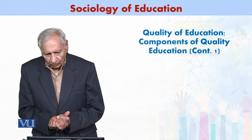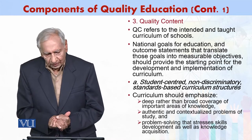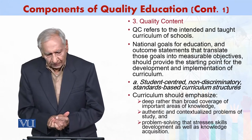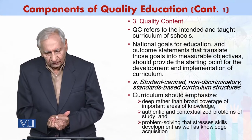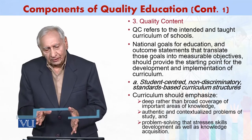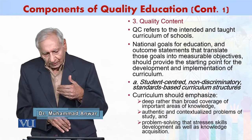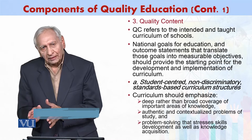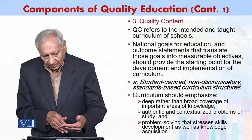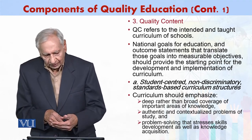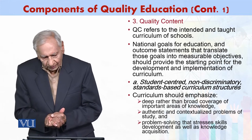Continuing with the components of quality education, we see that the third component listed over there is quality content. Quality content refers to the intended and taught curriculum of schools. This curriculum may include national goals for education and outcome statements in which this goal is achieved or not, measured with measurable objectives — and this is our starting point with respect to the implementation of the curriculum.